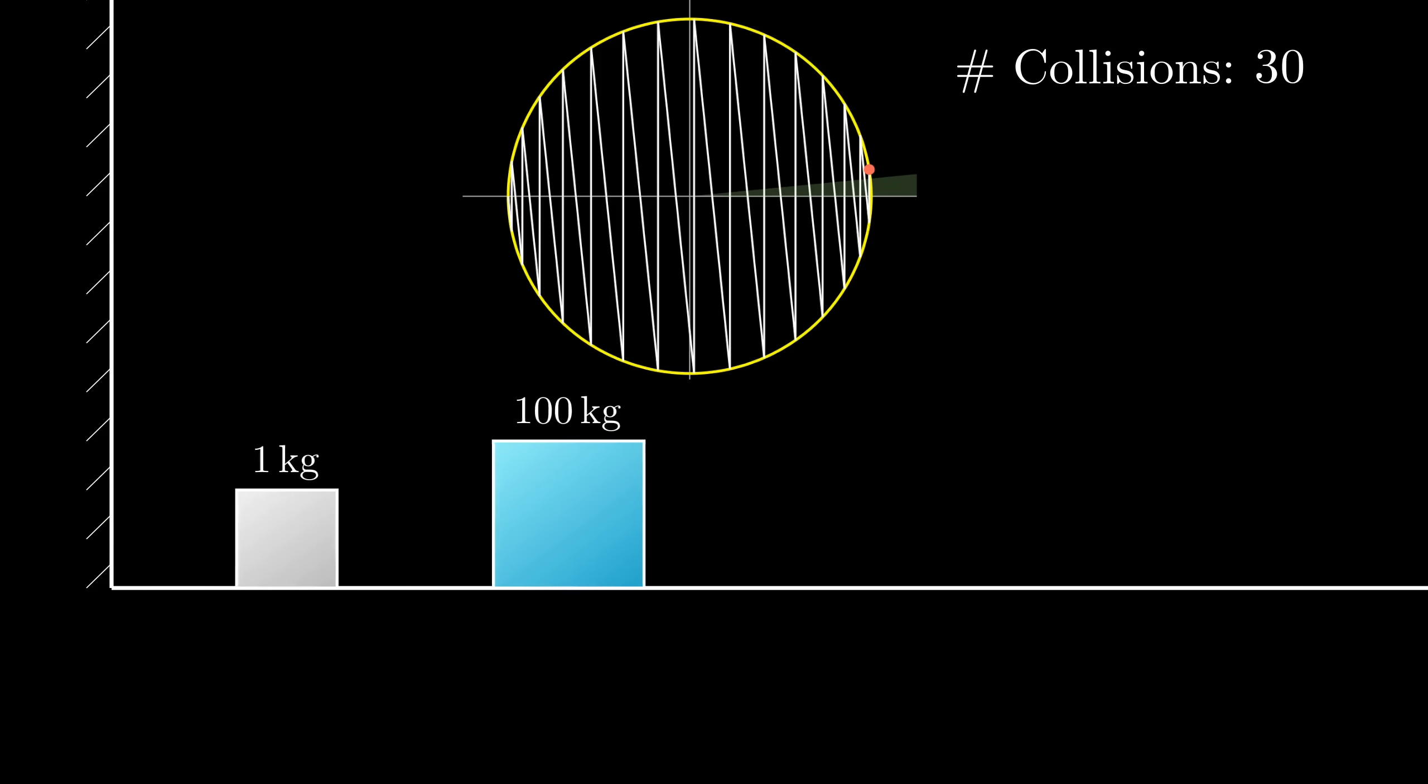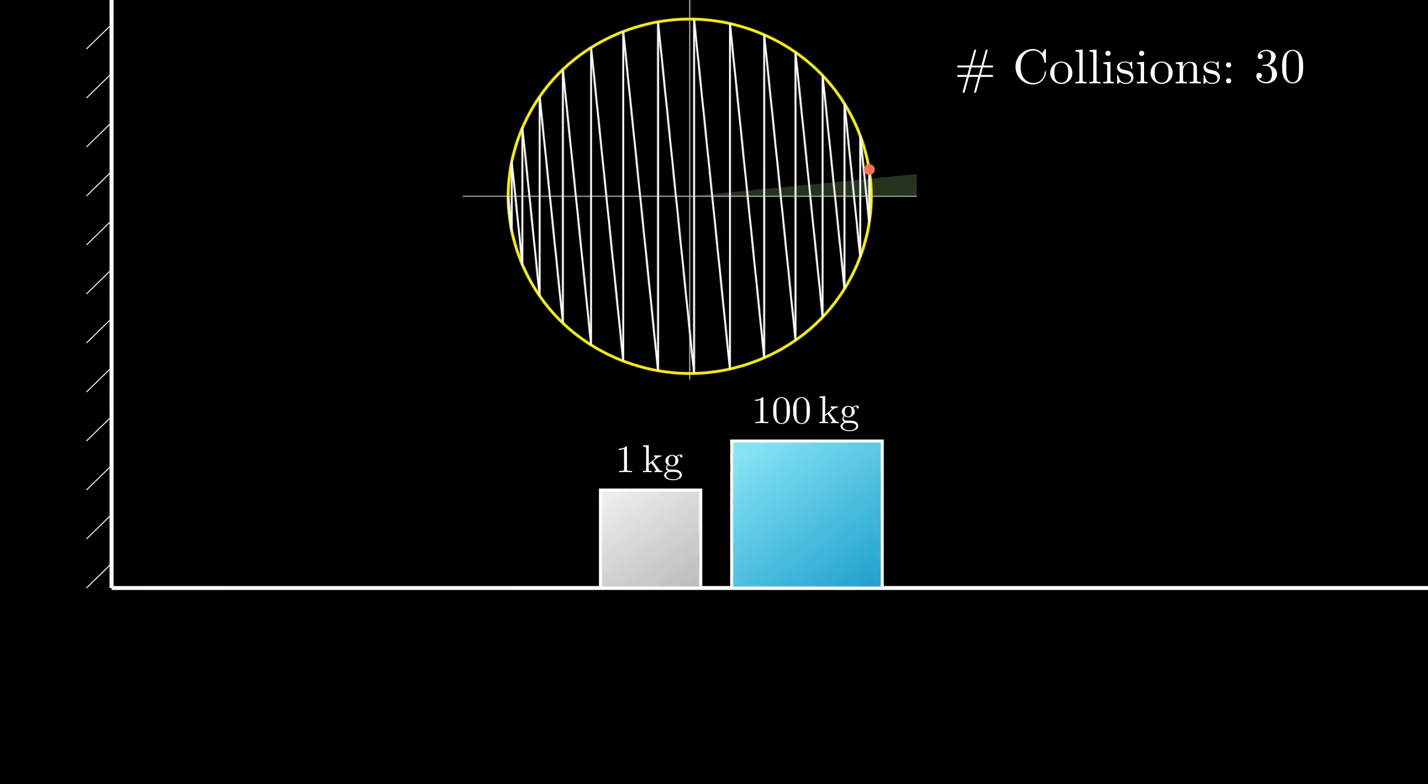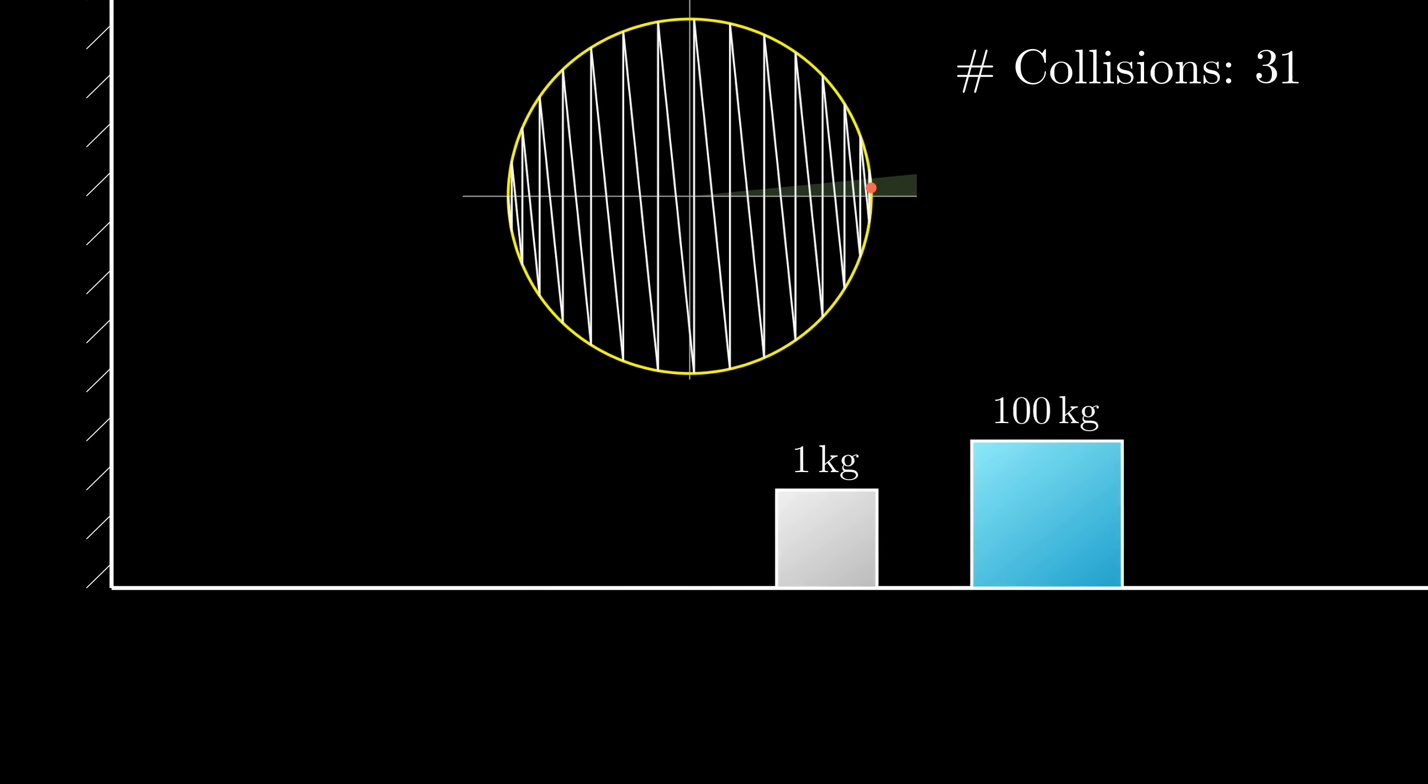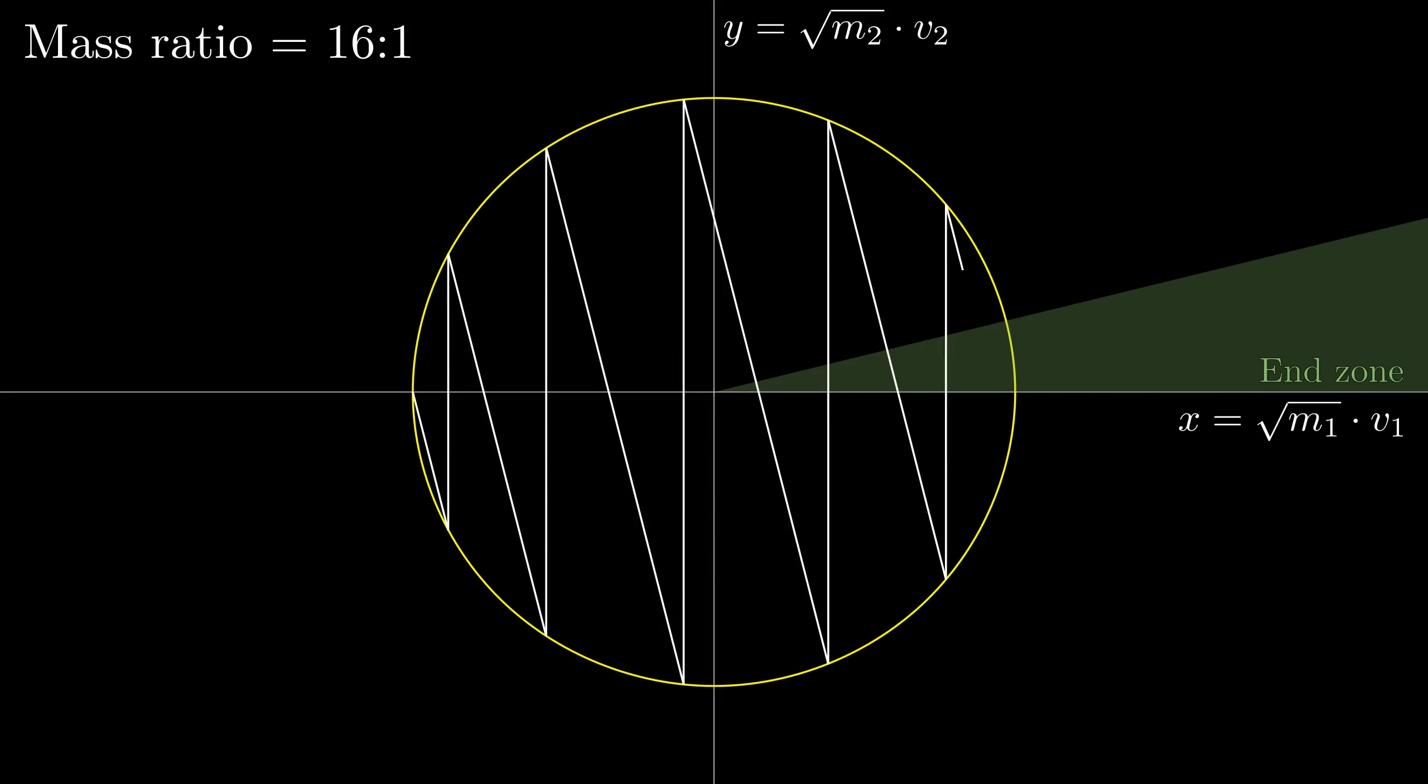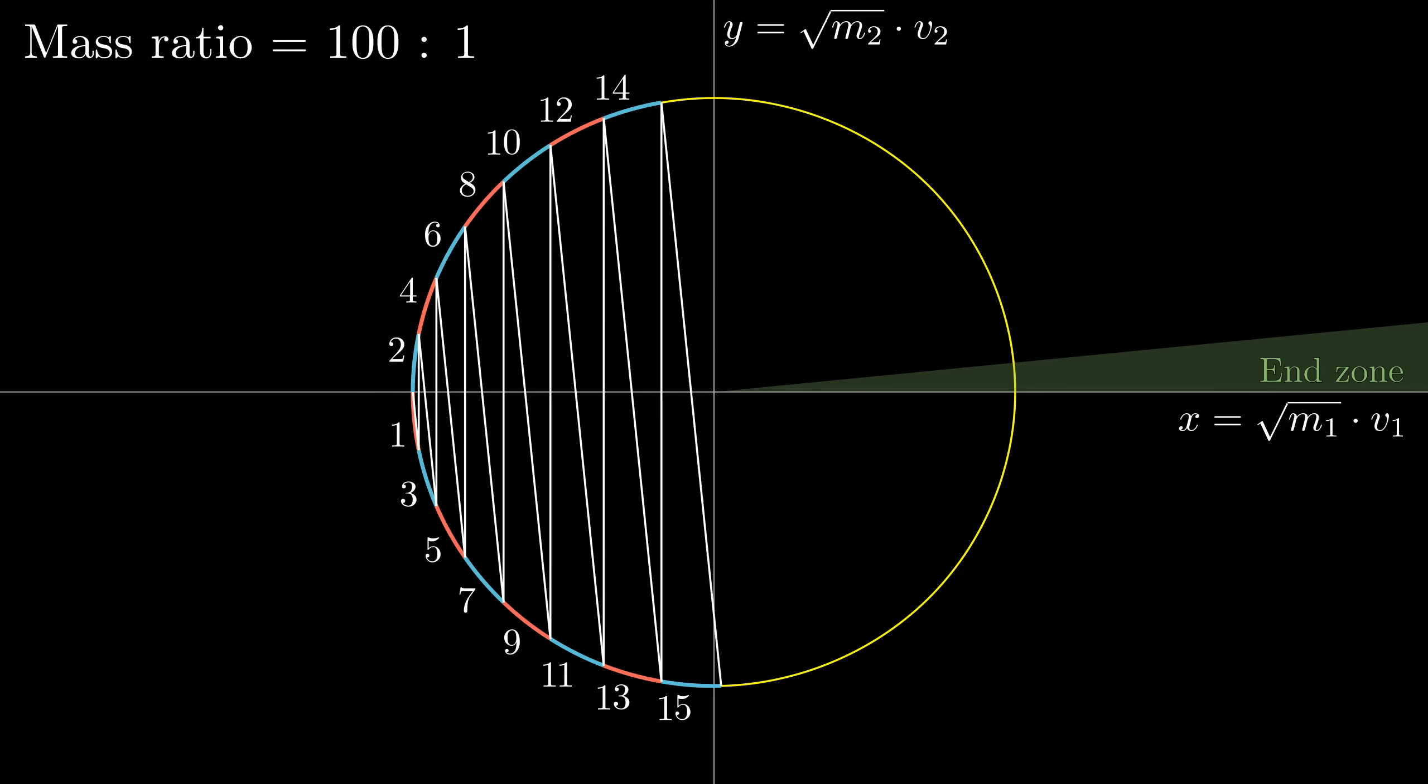But our question remains, why is it that when that mass ratio is a power of 100, the total number of steps shows the digits of pi? Well, if you stare at this picture, maybe, just maybe, you'd notice that all of the arc lengths between the points on this circle seem to be about the same. It's not immediately obvious that this should be true, but if it is, it means that computing the value of one such arc length should be enough to figure out how many total collisions it takes to get us into that end zone.